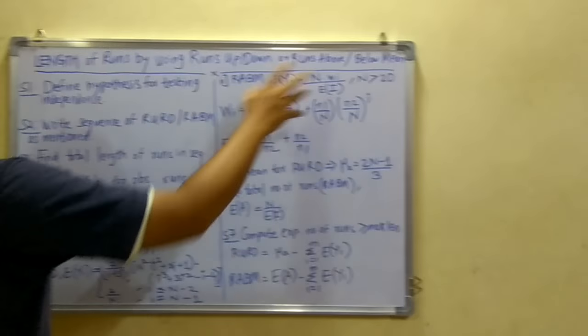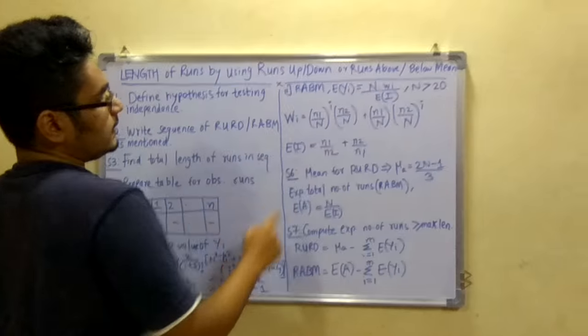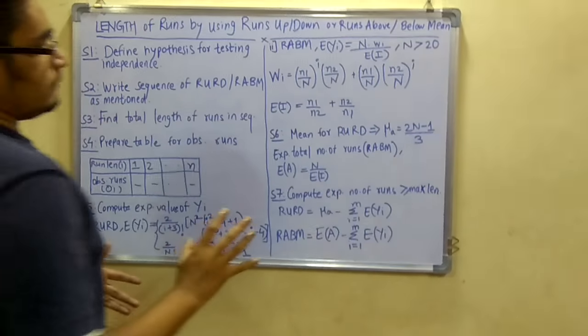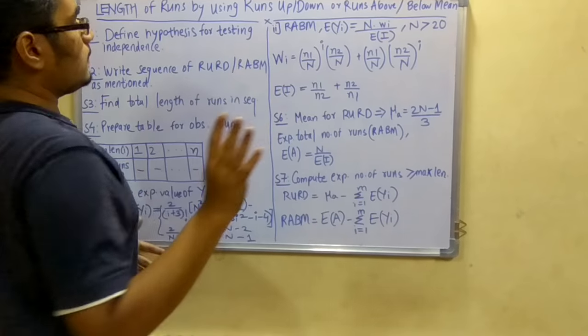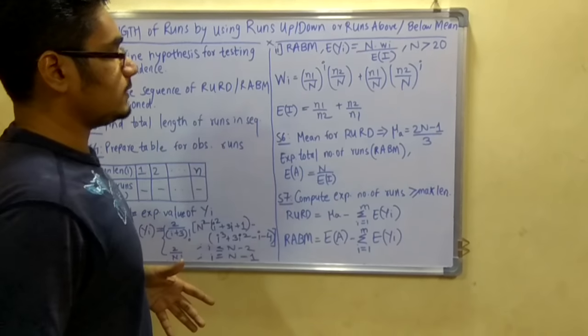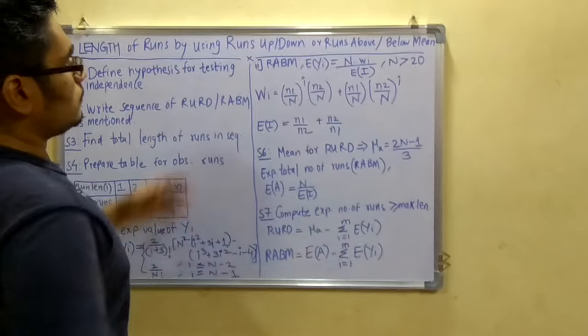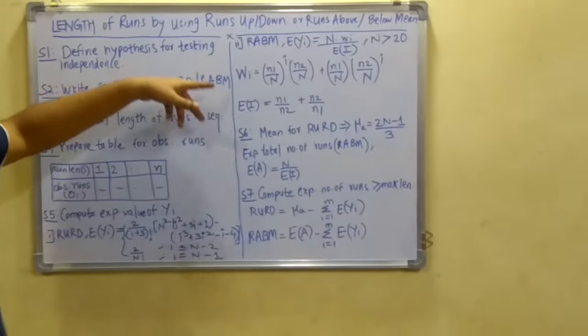Now after that you will come to ei. Now ei stands for the approximate expected number of length. These two terms are both approximate, not true estimations. So ei is given by n1/n2 + n2/n1. So these two formulas are easy to remember.